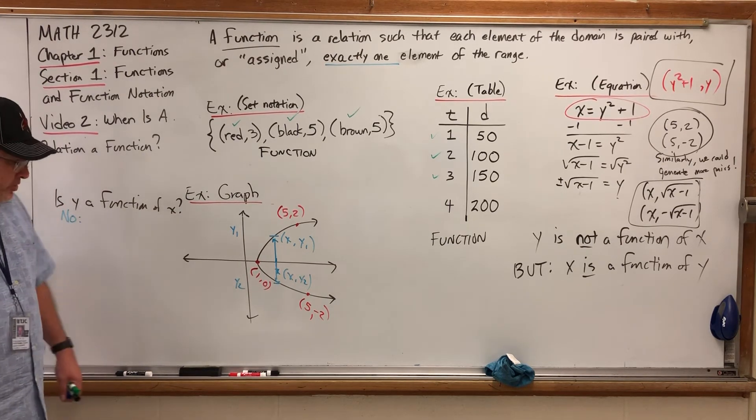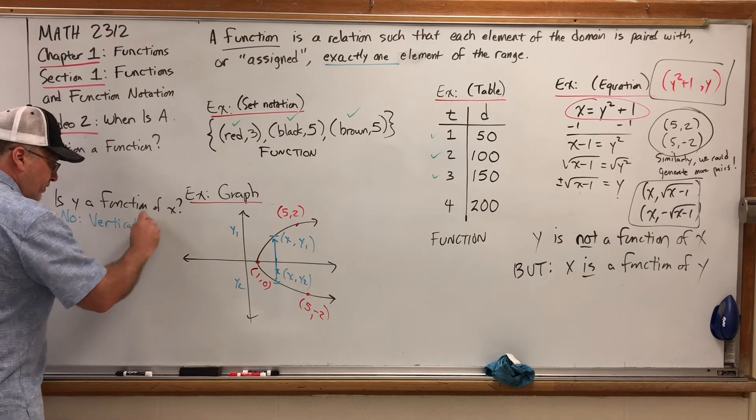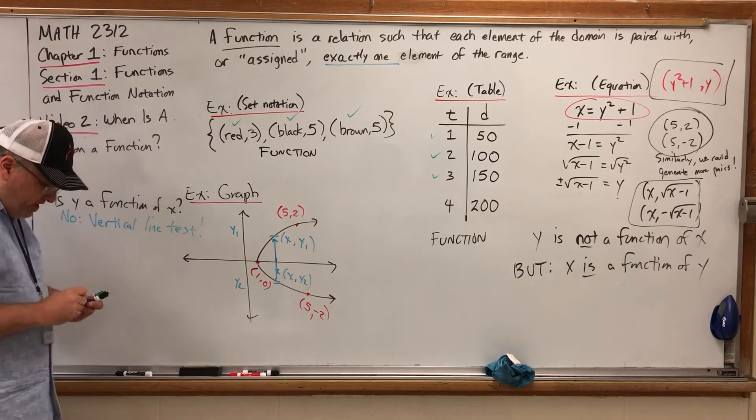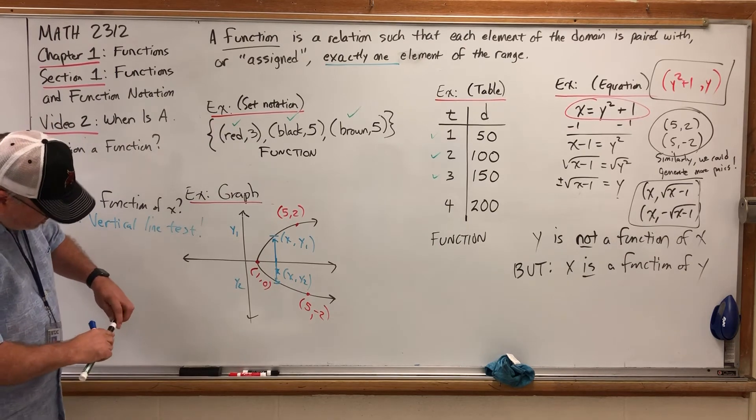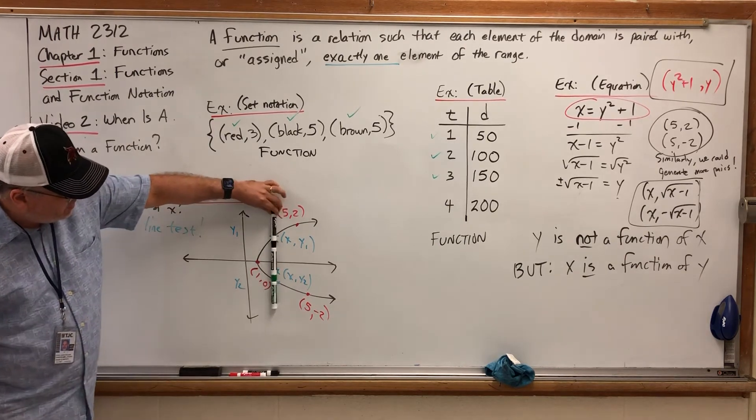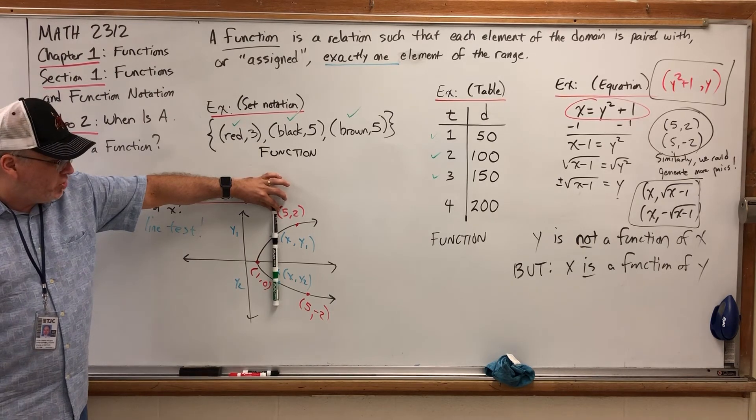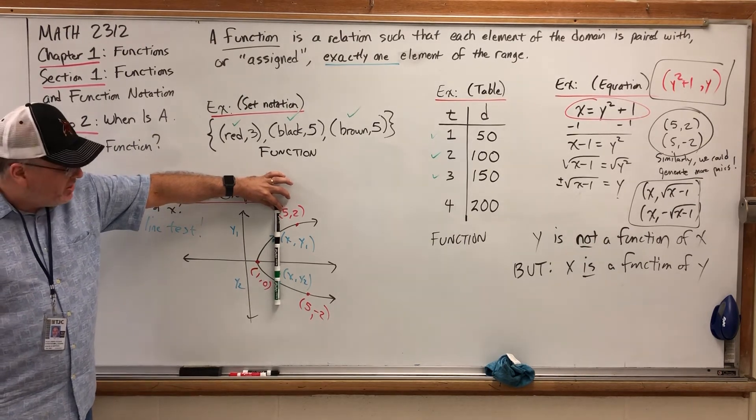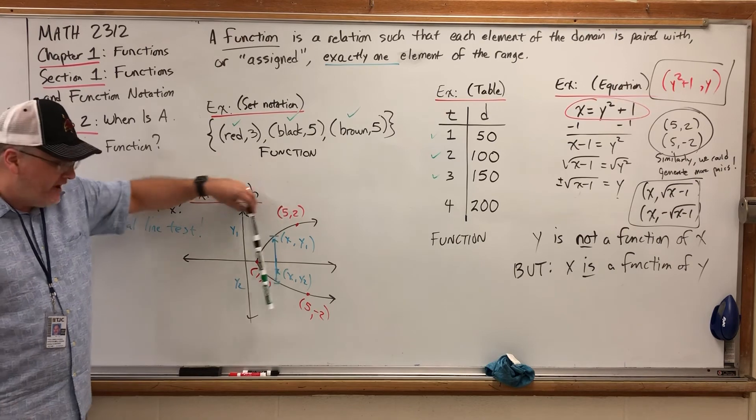Now, some of you may be familiar with something called the vertical line test. Which says, if you take the vertical line of your choice, and you can cross a graph more than once, then Y is not a function of X. Because the two places where it crosses represent points with the same X value, but different Y values. Meaning that I can't get a unique Y value for a given X value.